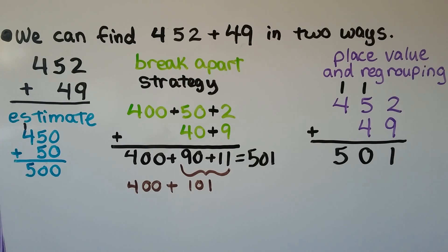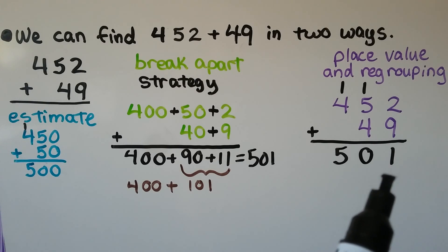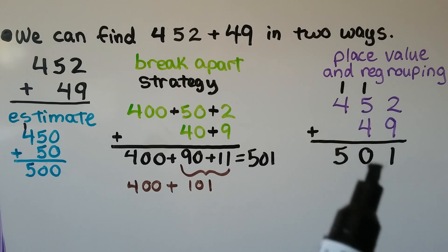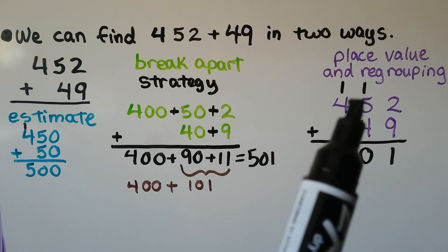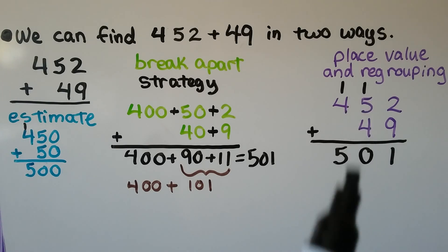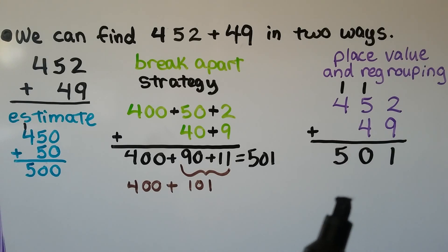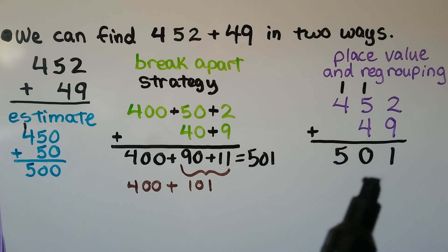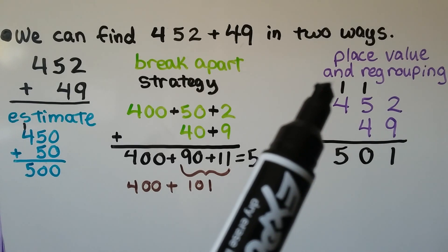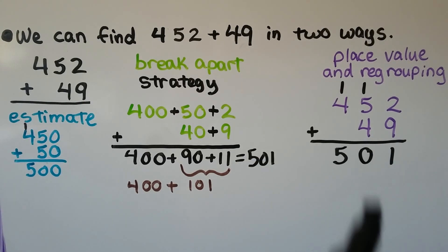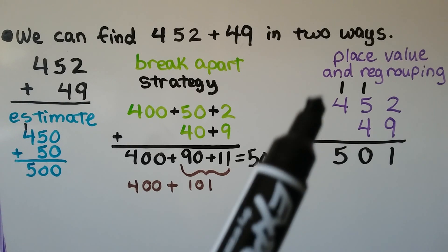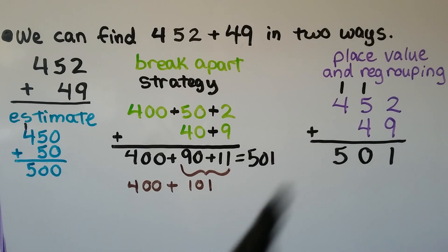Using place value and regrouping, we add the ones place: nine plus two is 11, so we regroup the ten into the tens column. In the tens column, four plus one makes five, so we have five plus five — that's 10 tens. We regroup the 10 tens as 100 and put zero in the tens place. One hundred plus 400 is 500. So 452 plus 49 equals 501.